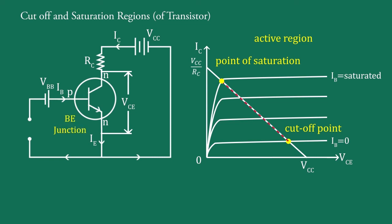In the active region, base-emitter junction remains forward biased, while collector-base junction remains reverse biased. The transistor works normally in this region.